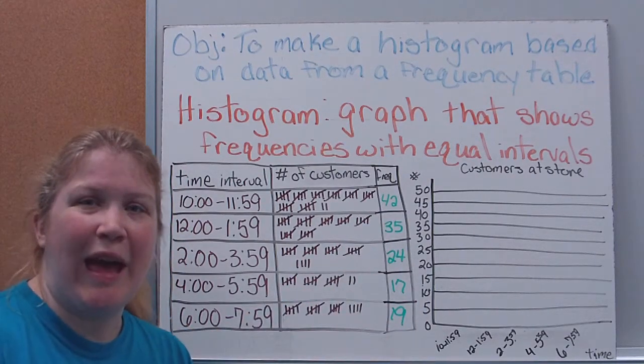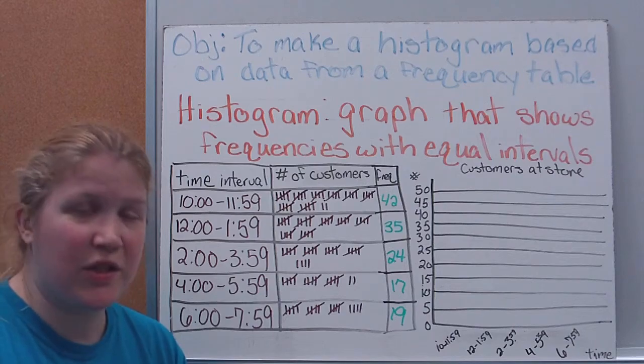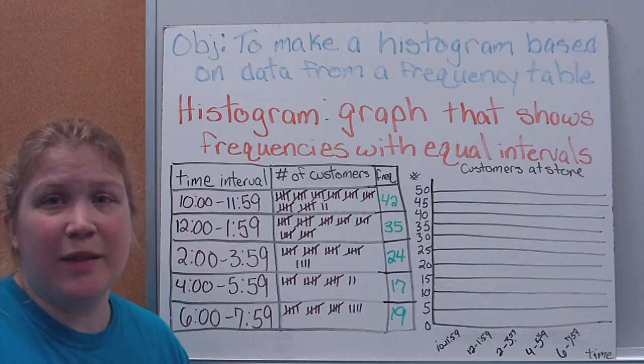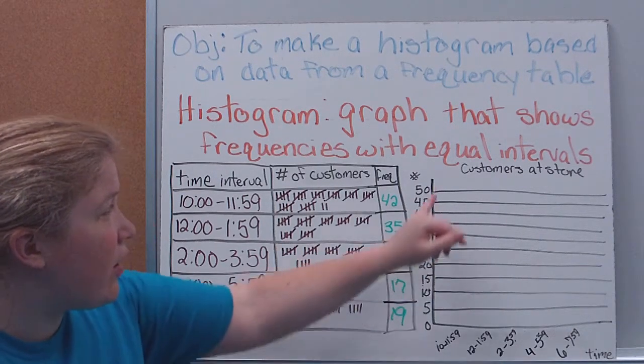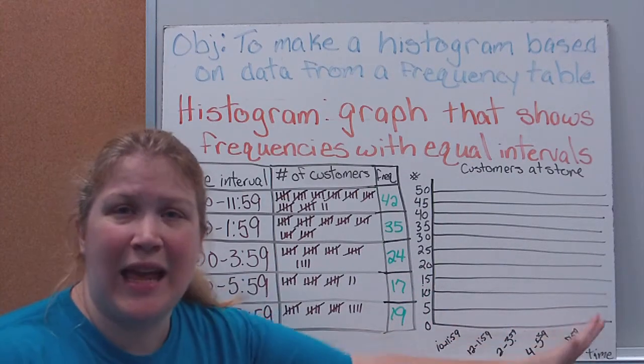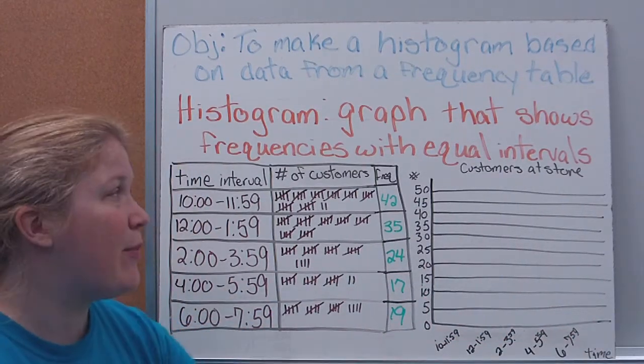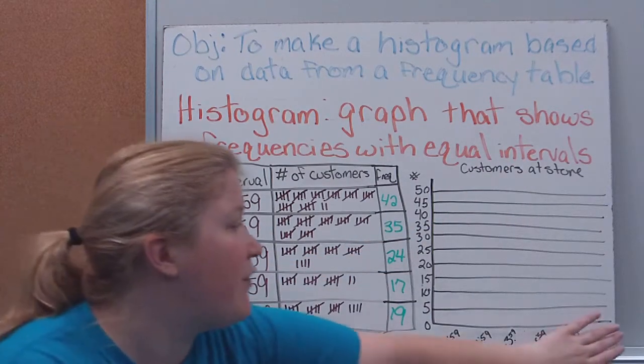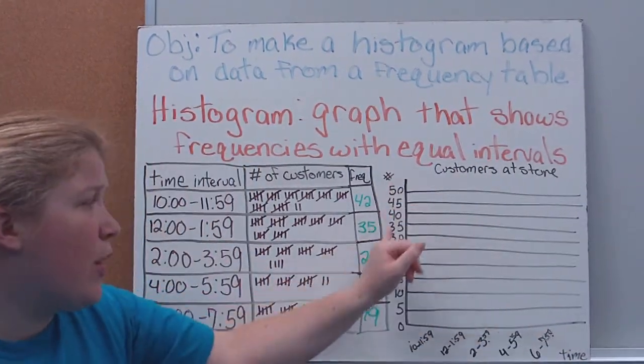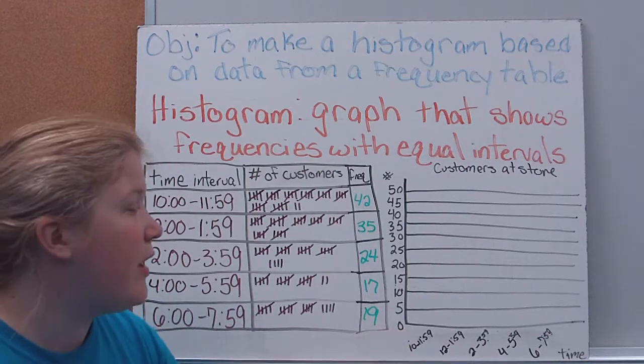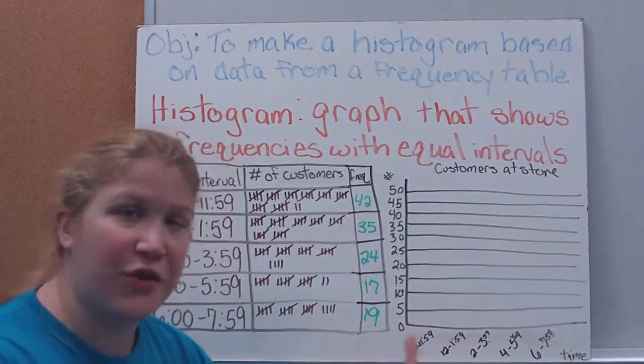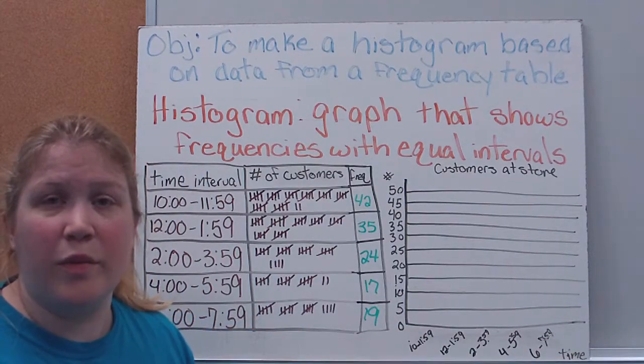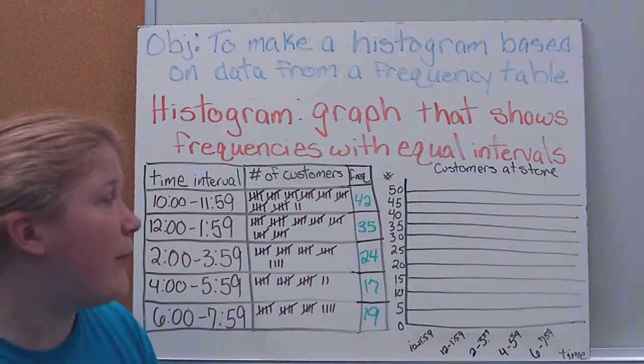All right, so these are the numbers we want to look at because that's what we're going to use to fill in our histogram. We're going to make it very similar to a bar graph. You'll notice I already have, we have a y-axis, an x-axis. I already drew those and have those labeled for you. Again, we have a title just like we would on a bar graph. Here would be the number of customers on my frequency table. Down here are my time intervals.